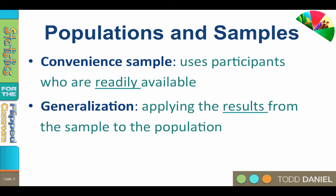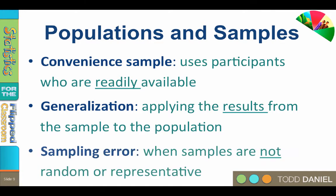Because of this, one joke goes that psychology is the scientific study of college sophomores. Overstated, yes, but something to keep in mind when using convenience samples. Convenience samples are more likely to lead to sampling error, which occurs when samples are not random or representative — when we ask too many of the same people, or we ask the wrong people.